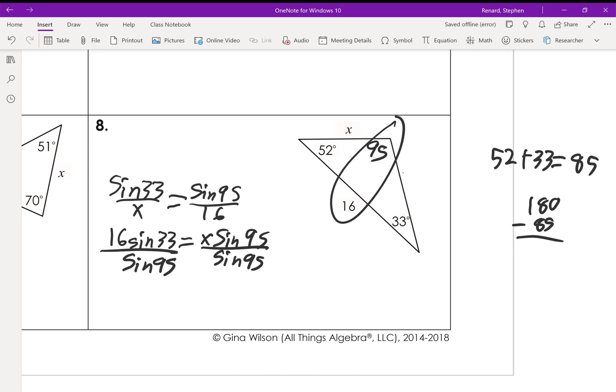Grab our calculator. We're going to go 16 sine 33 divided by the sine of 95. And we get x equals 8.7.